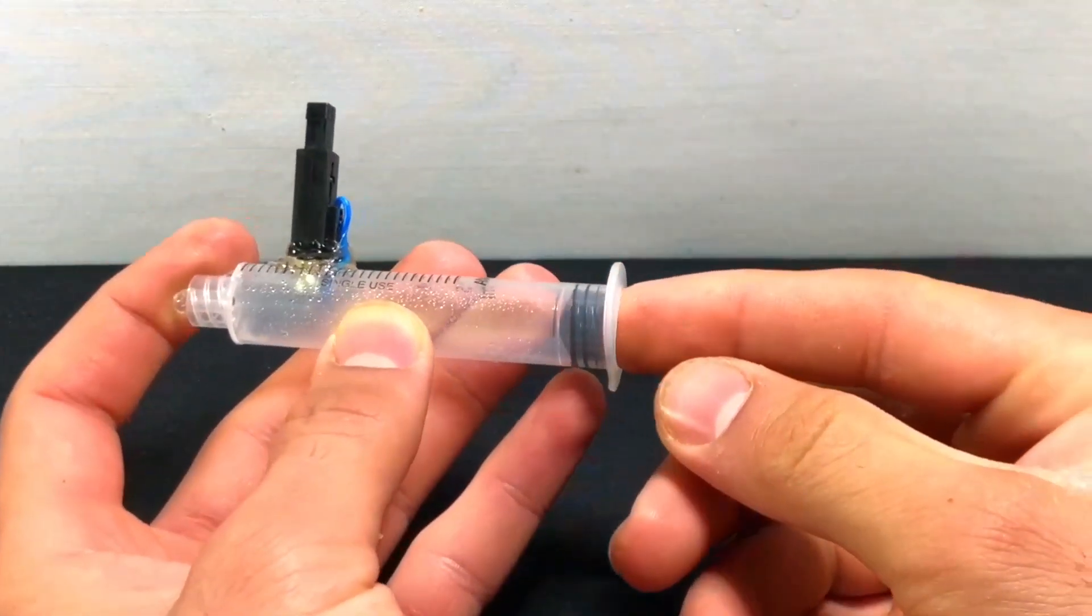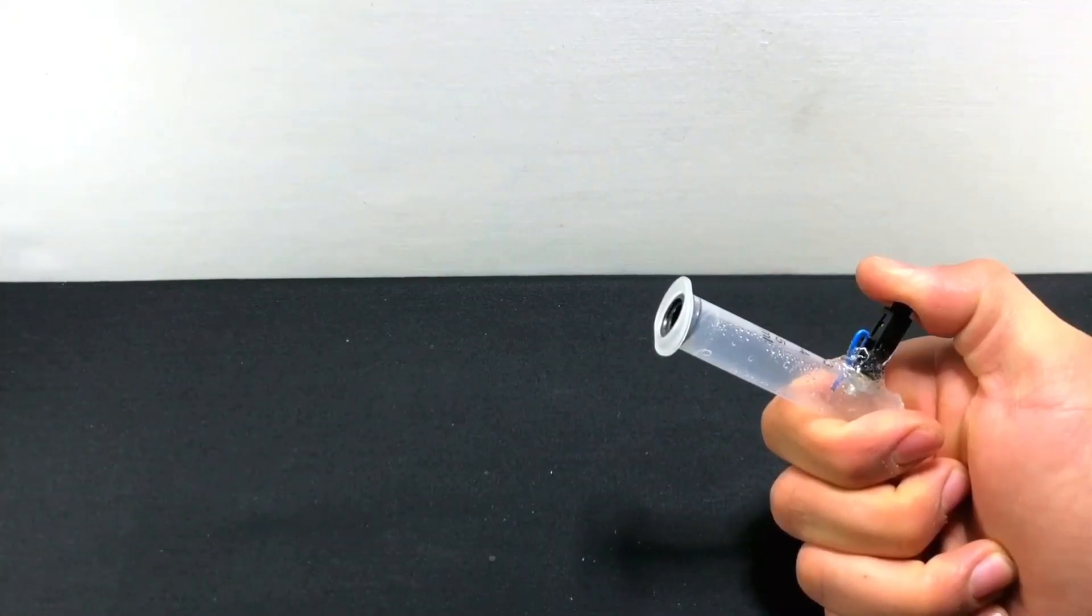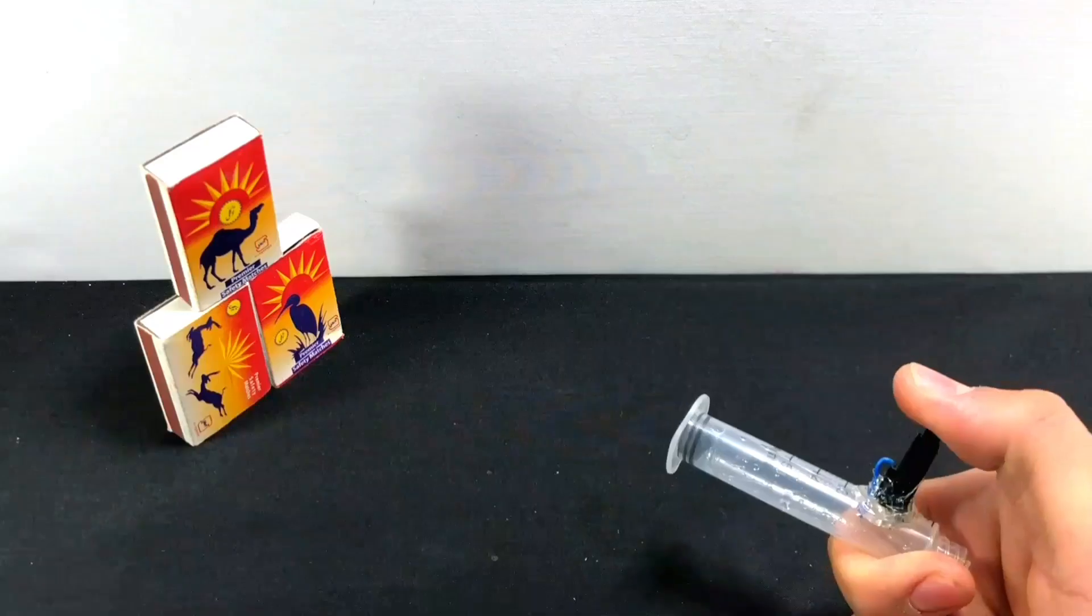Spray the amount of alcohol in the syringe and then put the rubber part of the syringe into the syringe. That's how easy it is to use the alcohol gun.